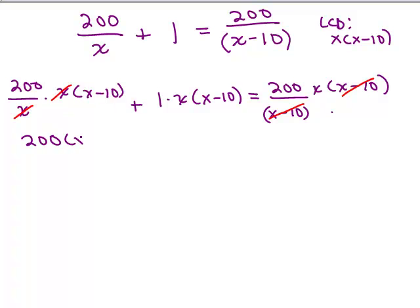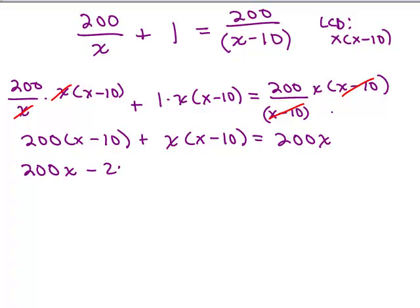So we have 200 times x minus 10. Let's just clean that up a little. 200 times x minus 10. And this is the same as just x times x minus 10. And on the right, we have 200x. All right, so let's do our distributive property on the left-hand side. We have 200x minus 2,000 plus x squared minus 10x equals 200x.